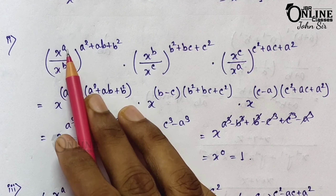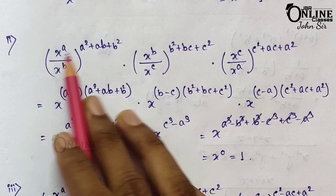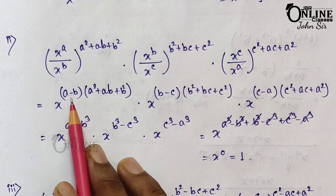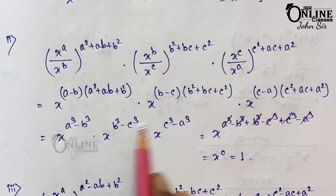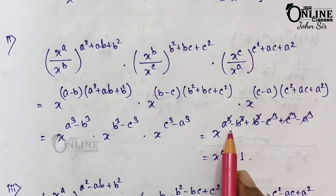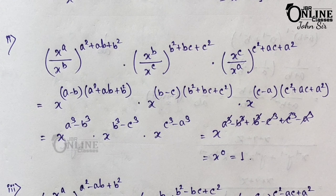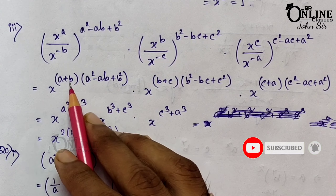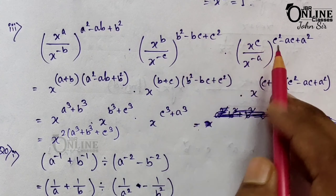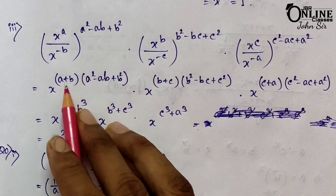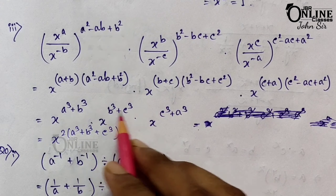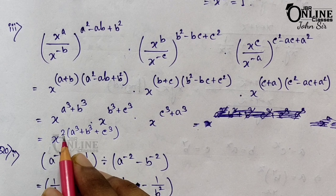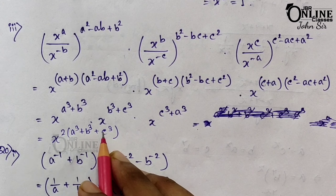Sum 19.2 and 19.3: For (x^a/x^b)^(a−b) × (x^b/x^c)^(b−c) × (x^c/x^a)^(c−a): powers give (a−b)², (b−c)², (c−a)² pattern; all cancel to x^0 = 1. For (x^a/x^(−b))^(a−b) × ...: here a−(−b) = a+b, leading to powers a³+b³, b³+c³, c³+a³ which sum to 2(a³+b³+c³). Final answer: x^(2(a³+b³+c³)).